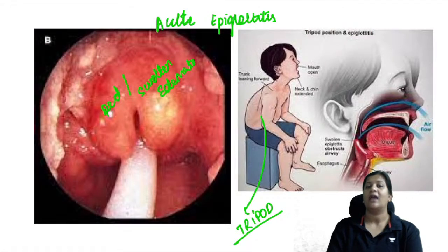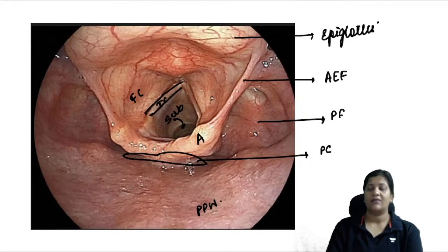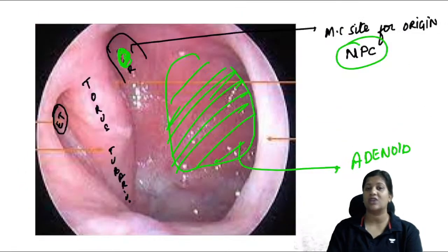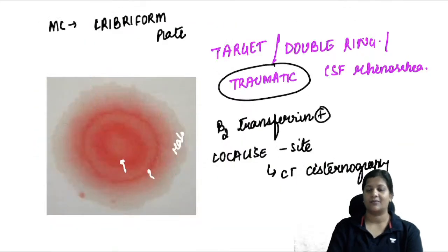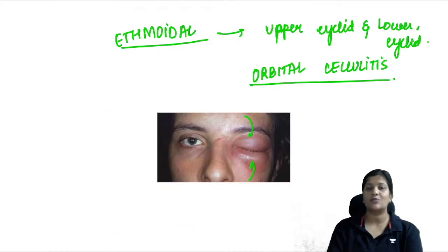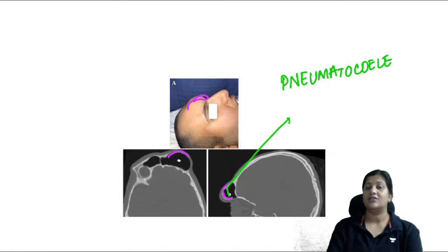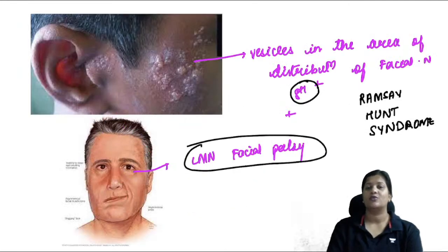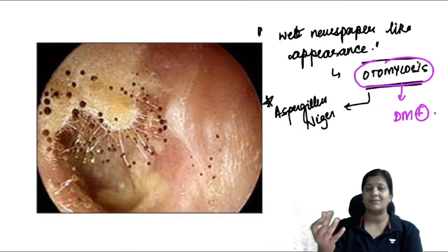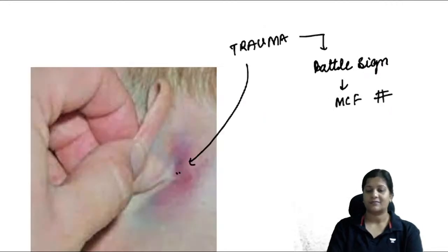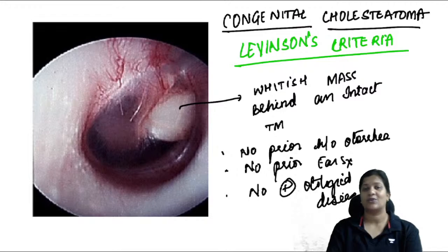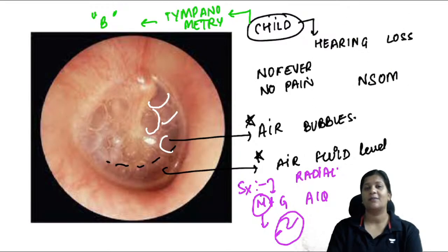To recap today's session: we covered vocal cord nodules, epiglottitis, laryngomalacia, normal larynx, tonsillolith, pre-vertebral abscess, retropharyngeal abscess, peritonsillar abscess, diphtheria, tonsillitis, JNA, adenoid, target sign (CSF rhinorrhoea), atrophic rhinitis, rhinoscleroma, rhinosporidiosis, ethmoidal sinusitis, pneumatocele, allergic rhinitis, DNS, rhinophyma, normal nasal anatomy, Ramsay Hunt syndrome, otomycosis, Battle sign, mastoiditis, traumatic perforation, glomus tumor, otosclerosis, TBOM, congenital and acquired cholesteatoma, CSOM tubo-tympanic type, SOM, and ASOM.